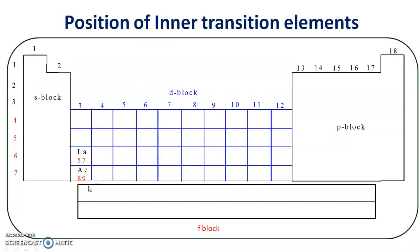The next point is the position of inner transition elements in the periodic table. This is the outline of the periodic table. The periodic table is divided into four blocks, based on the fact that the differentiating electron enters which orbital — whether it enters the s orbital, p orbital, d orbital, or f orbital. Based on this fact, there are four blocks.